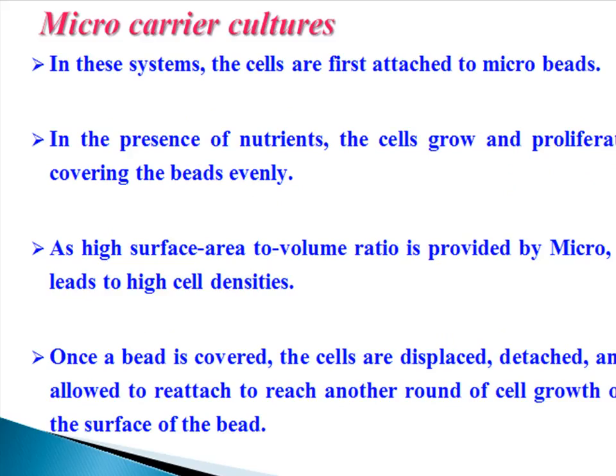In micro carrier cultures, the cells are first attached to microbeads. In the presence of nutrients, the cells grow and proliferate covering the beads evenly. As a high surface area to volume ratio is provided by microbeads, it leads to high cell densities. Once a bead is covered, the cells are displaced, detached, and allowed to reattach to reach another round of cell growth on the surface of the bead.